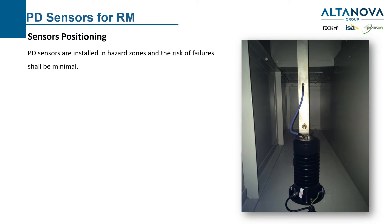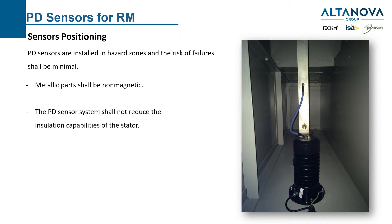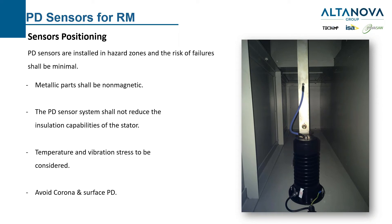Regarding sensor positioning, for the same reason — we install these sensors in a particular environment and normally only once in a lifetime — we have to make sure everything is done properly. The sensor shall not have magnetic bars; it should not reduce the insulation capabilities of the stator and bus bar section. Sensors must be acceptable under ongoing temperature and vibration stress, and very importantly, we must make a proper installation with proper spacing, avoiding corona and surface PD that would affect the PD measurement for the rotating machine.